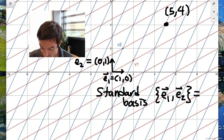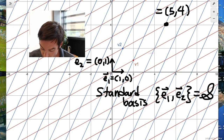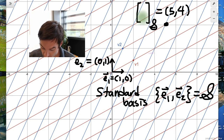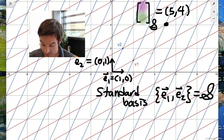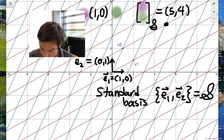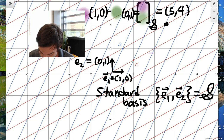The first coordinate is going to be the weight attached to the first basis vector E1, which is (1,0), and the second coordinate is the weight I need to attach to the second basis vector (0,1), such that when I add those two together I get (5,4).